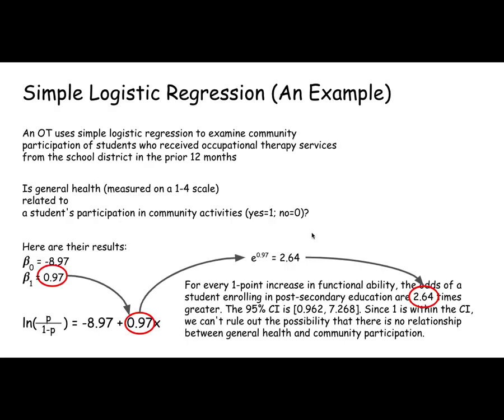So here's another example. Let's say an OT uses logistic regression to examine community participation, so does somebody get involved in community activities or not. And they're using a general health measure that's measured on a one to four scale.